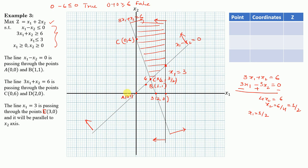Point F is the intersection of x1 - x2 = 0 and x1 = 3. Substituting x1 = 3 gives x2 = 3, so the coordinates of F are (3, 3).